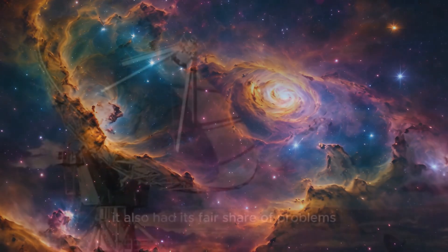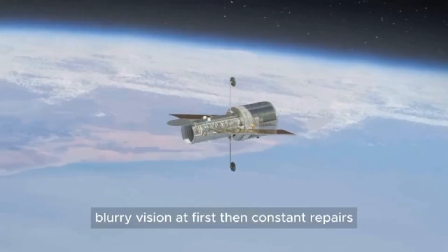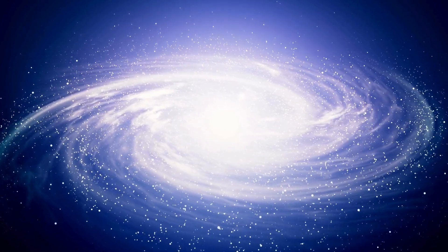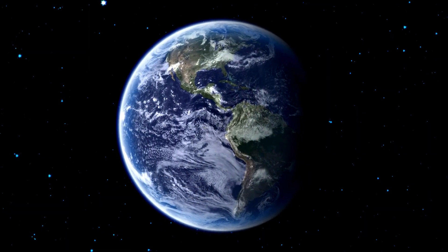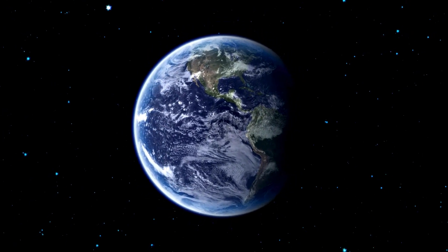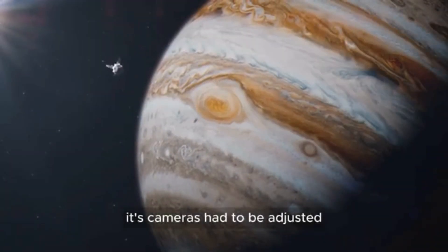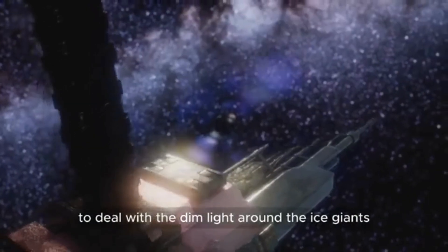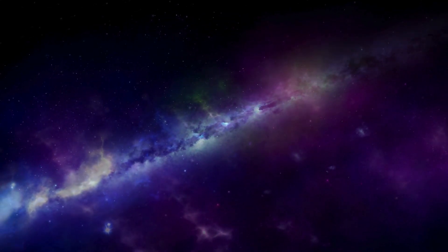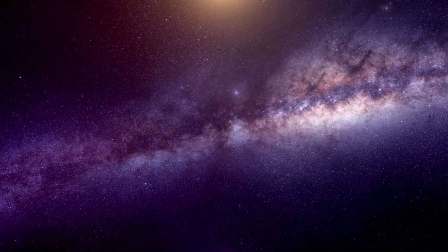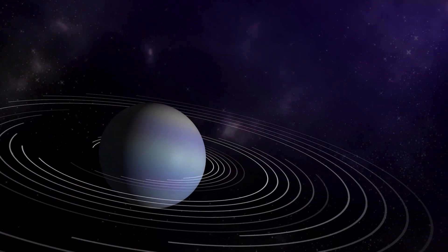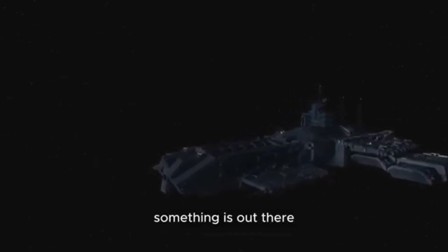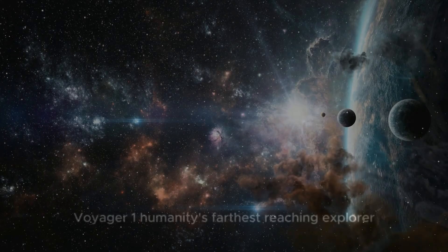The satellites that changed everything. Voyager 1 isn't the only satellite to transform our understanding of the universe. Many other missions have reshaped history, proving time and again that space is filled with surprises. Sputnik 1, 1957. The beginning. The first artificial satellite launched by the Soviet Union. Sputnik 1 was a small metal sphere that did little more than transmit radio signals. But its launch triggered the space race, proving that putting objects in orbit was possible.